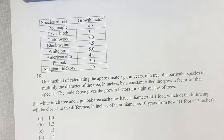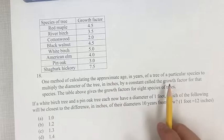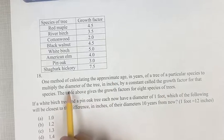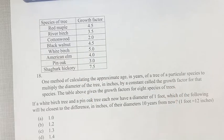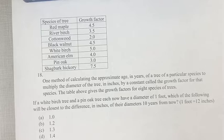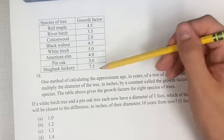Hello and welcome back to another video. In this problem, we're told that one method of calculating the approximate age of a tree is to multiply the diameter of the tree by a constant called the growth factor, which is going to be different for every species because every tree grows at a different rate.